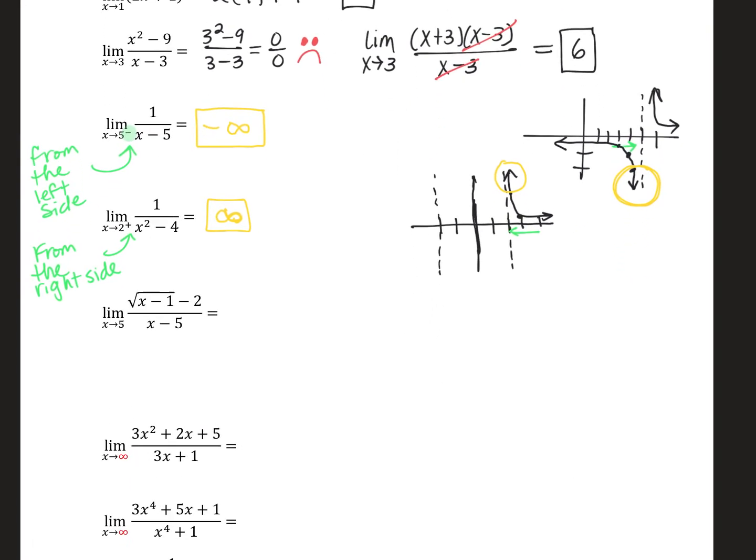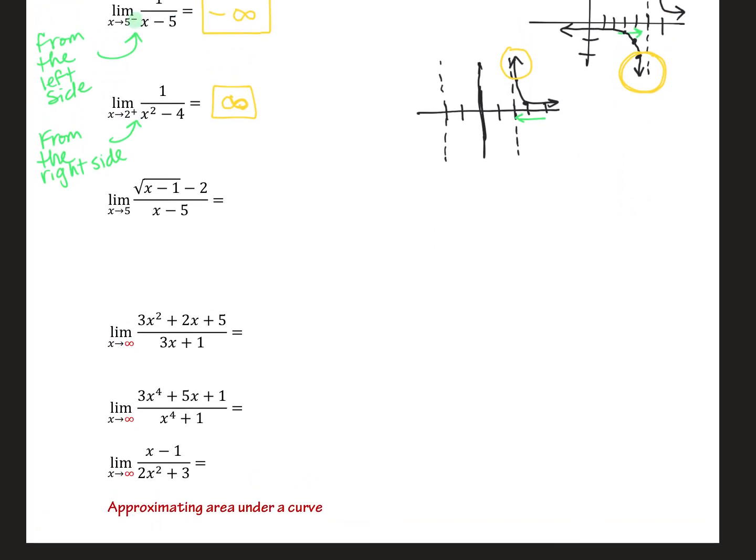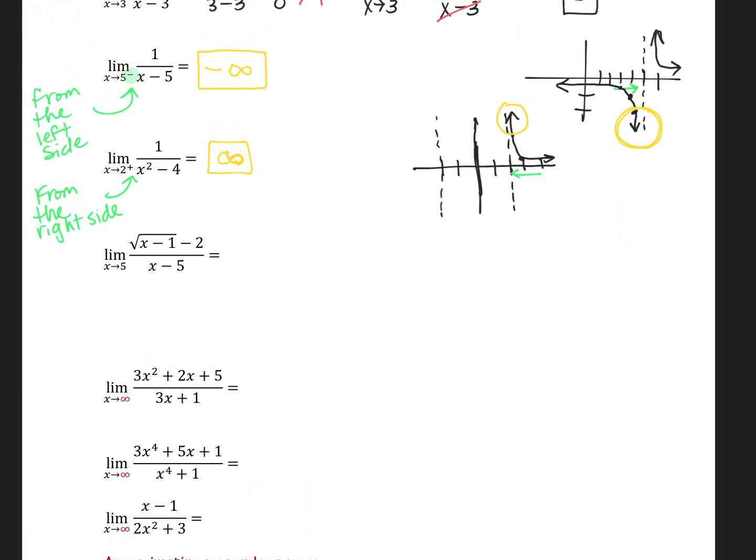Looking at some more here, some other strategies. As you approach five, what's the limit as x approaches five? Well, here, five minus one is four. Square root of four is two. Two minus two is zero. And then five minus five is zero. So we have the issue of an indeterminate form. So when you have indeterminate forms like zero over zero involving limits with square roots, what we're going to do is called multiply by the conjugate.